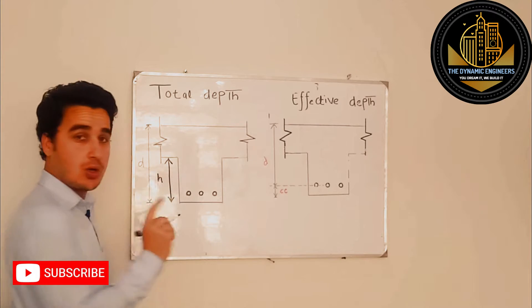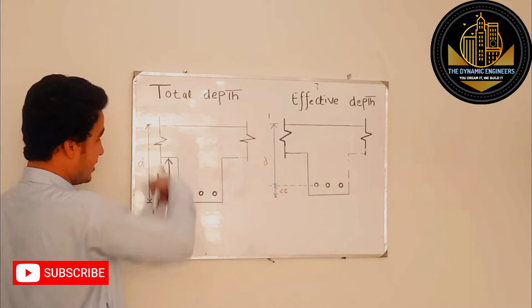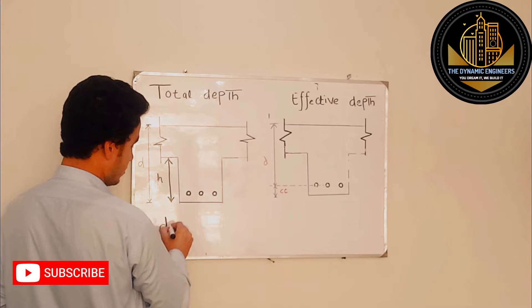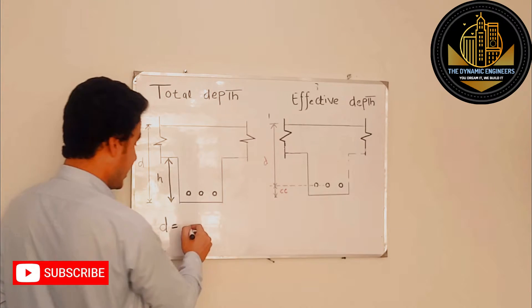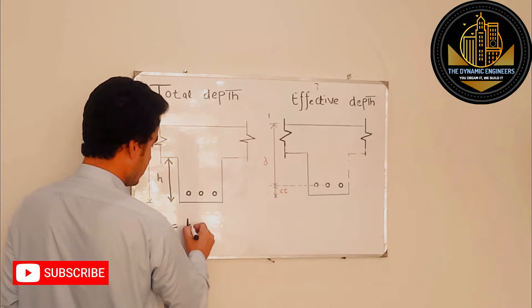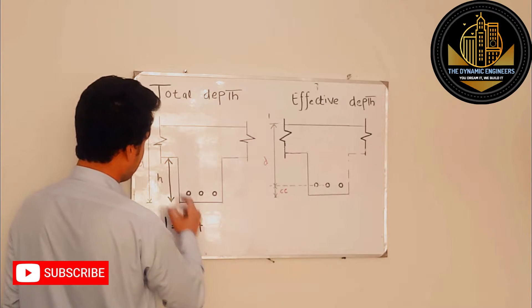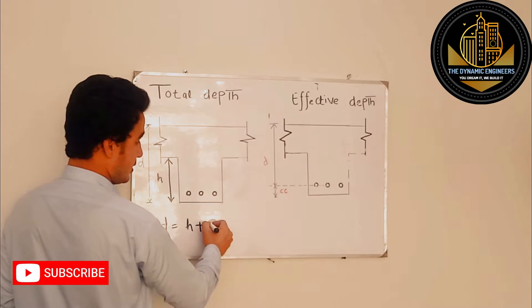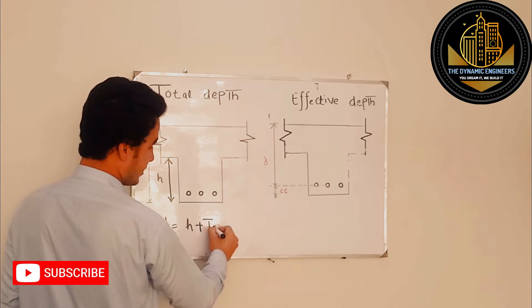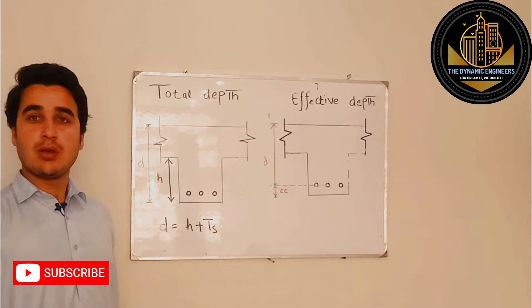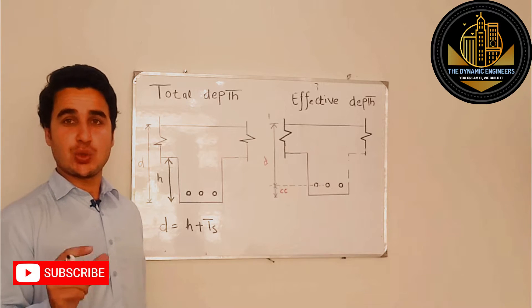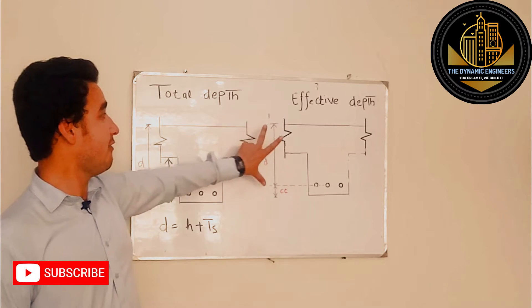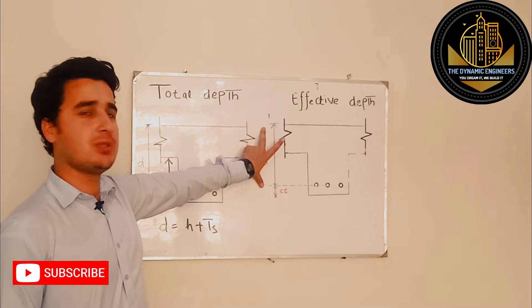So the total depth here - this D is equal to the edge (hanging part) plus the thickness of slab, which I will call Ts. This is the total thickness of this beam. This is a simple concept.